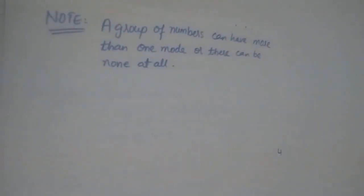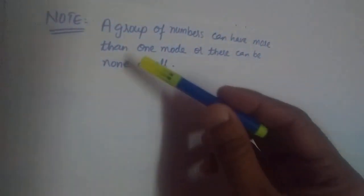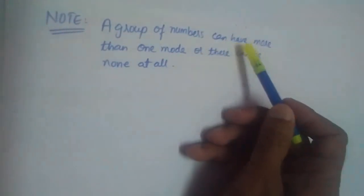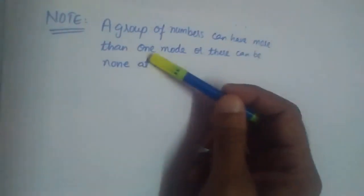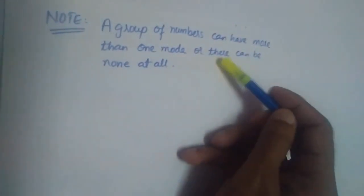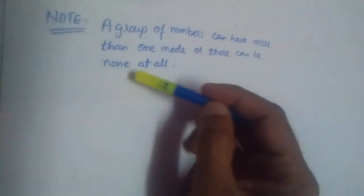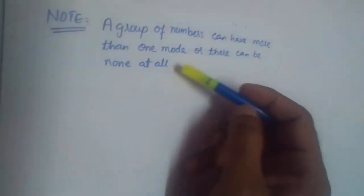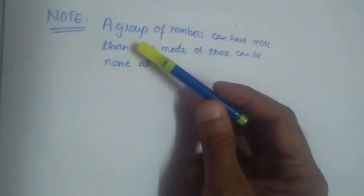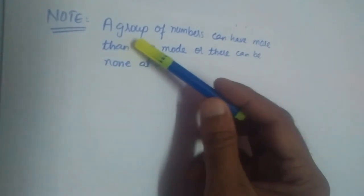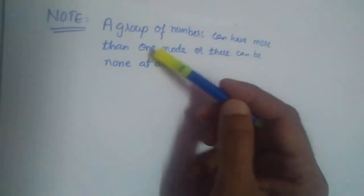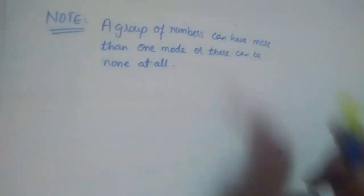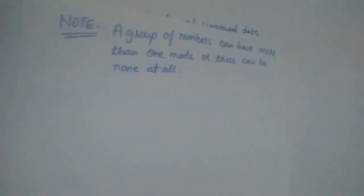Note: a group of numbers can have more than one mode, or there can be no mode at all. A group of numbers can have more than one mode or there can be none at all.